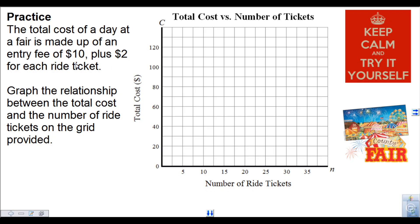All right. We know at the beginning the entry fee is $10, so right away we can put a dot there. Now the relationship between cost and the number of ride tickets—if we're going to create an equation in the form y equals mx plus b, you can do cost equals 2 times n plus 10.